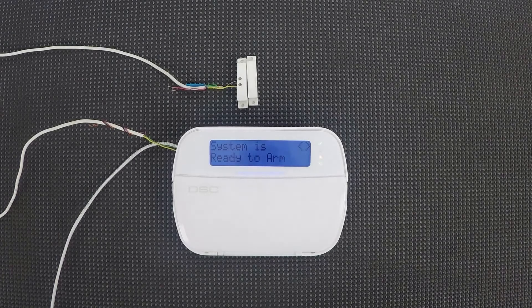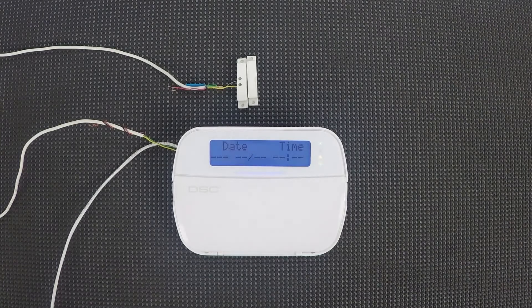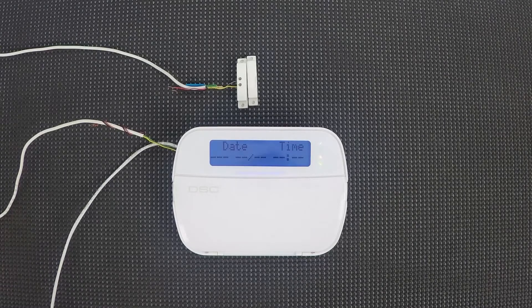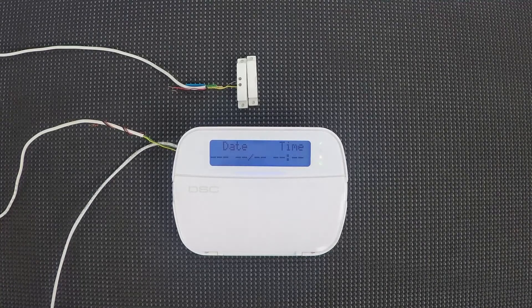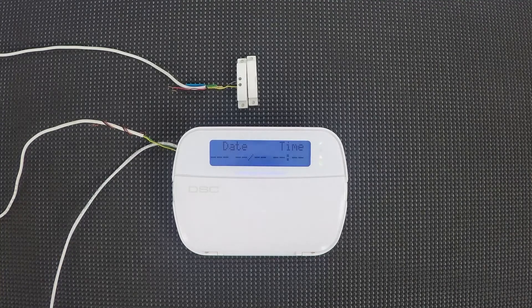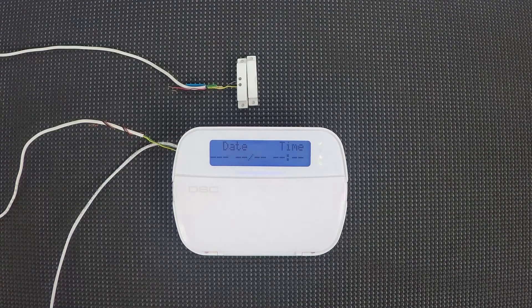All right, so I've just turned on the new control panel, and I'm just gonna go over the basic programming that I've already done on the default programming. Only changes I've made is I've turned off the first eight zones, actually I've turned off all the zones, so that when I turn on zone nine, it's gonna be the only zone active.